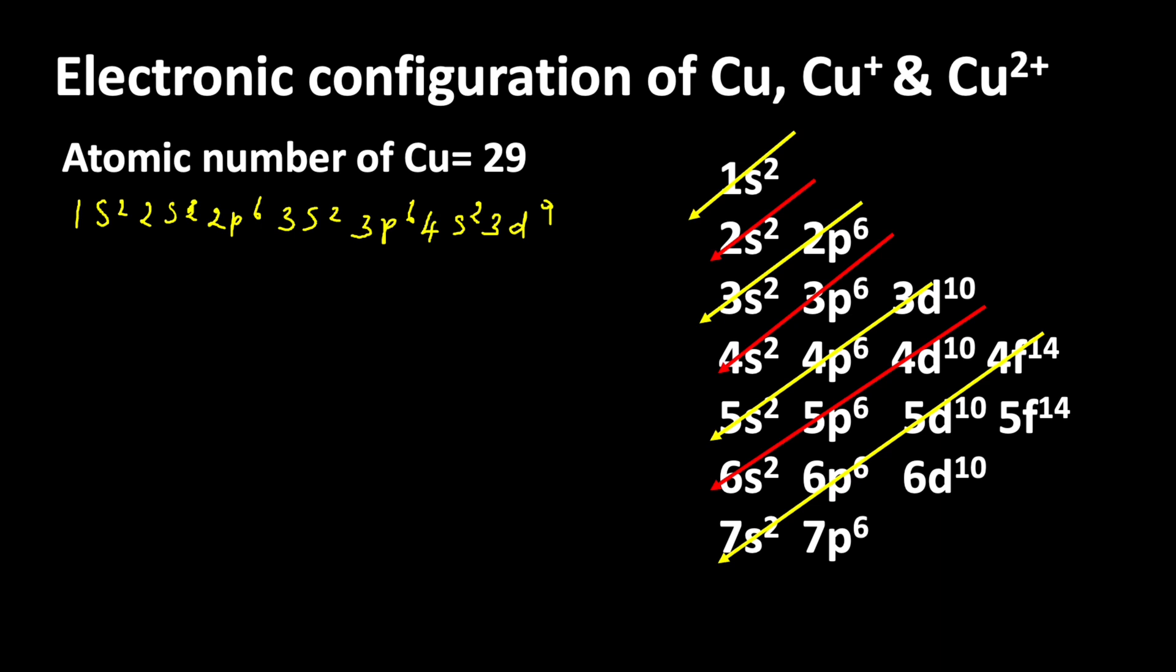But this is not the correct electronic configuration because to get stability, half-filled and completely filled orbitals are stable. The maximum number of electrons in d orbital is 10, which means here in copper 3d orbital needs one more electron.